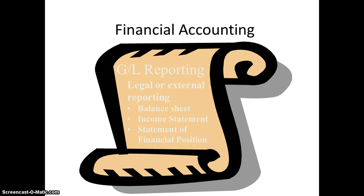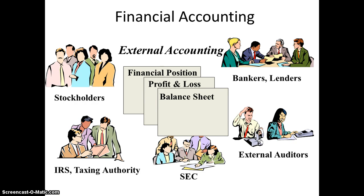Financial Accounting is basically used for external reporting — GL reporting, legal or external reporting. All reports that we generate for legal purpose are FI-related finance. Controlling is purely internal, as I already discussed. Legal or external reporting includes balance sheet, income statement, and statements of financial position — all generated at the financial accounting level. Basically, financial accounting deals with external accounting: financial position, profit and loss, and balance sheet. These are shared with bankers or lenders, external auditors who audit our company, the SEC, IRS or taxing authorities, and stockholders.